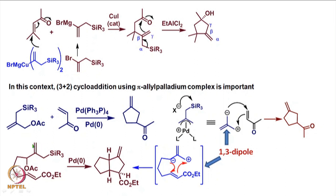Similarly, if we take a molecule with an inbuilt allyl acetate and allylsilane along with an alpha,beta-unsaturated system and treat with Pd(0), we get a bicyclic molecule. There are already enough carbons to make a cyclopentane on the left-hand side, and the right-hand side leads to another cyclopentane, giving a bicyclic molecule with two cyclopentane rings. The 1,3-dipole generated from the Pd(0) reaction has its negative charge attack the alpha,beta-unsaturated system, closing the 5-membered ring.